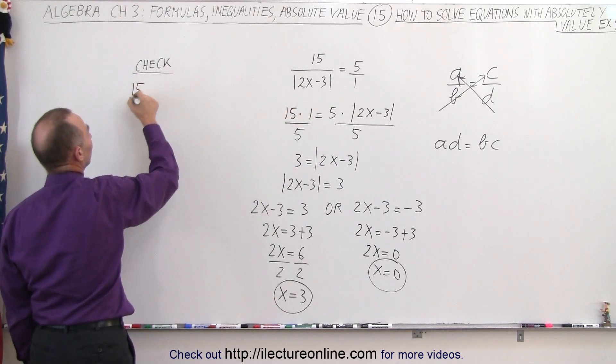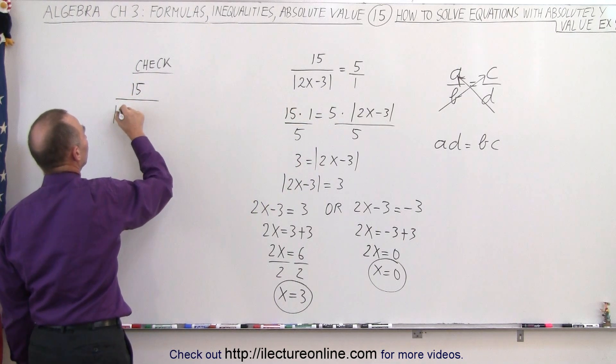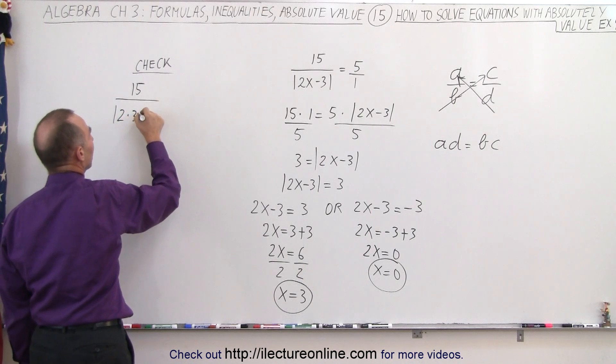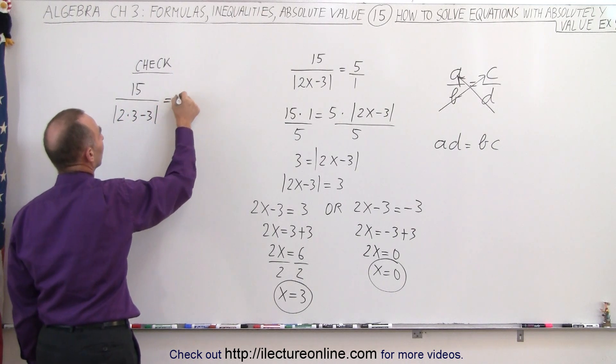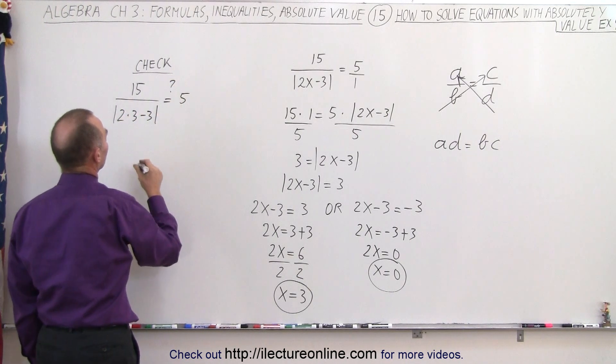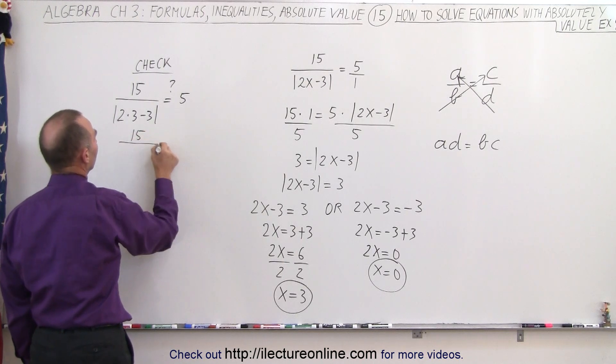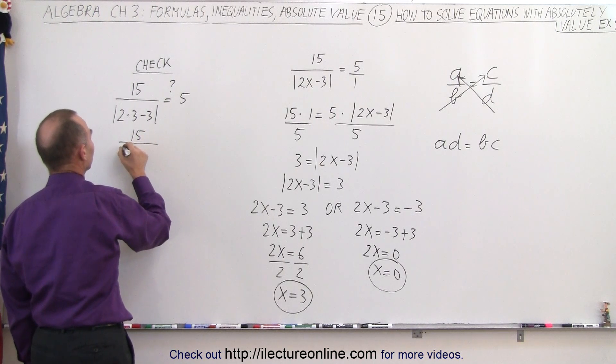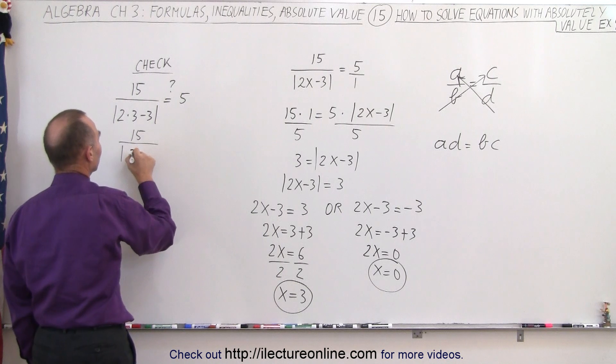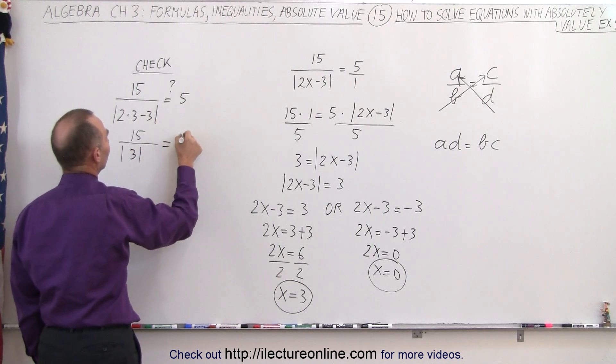So is this correct? 15 divided by 2 times 3 minus 3 equals 5. So 15 divided by the absolute value of 6 minus 3, which is 3, is equal to 5, question mark.